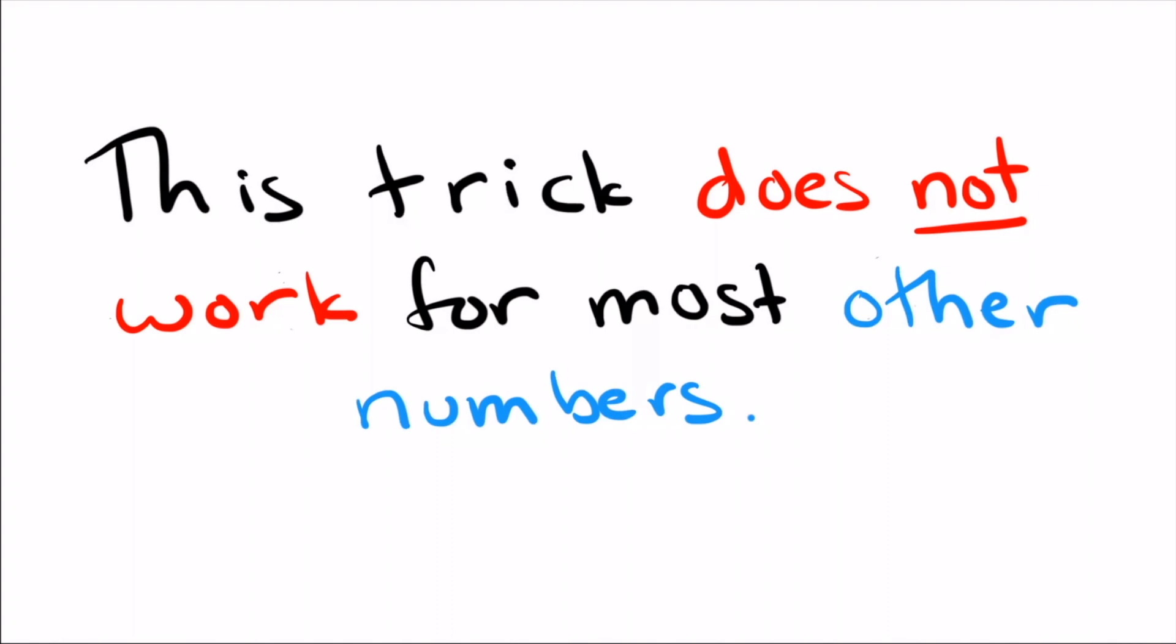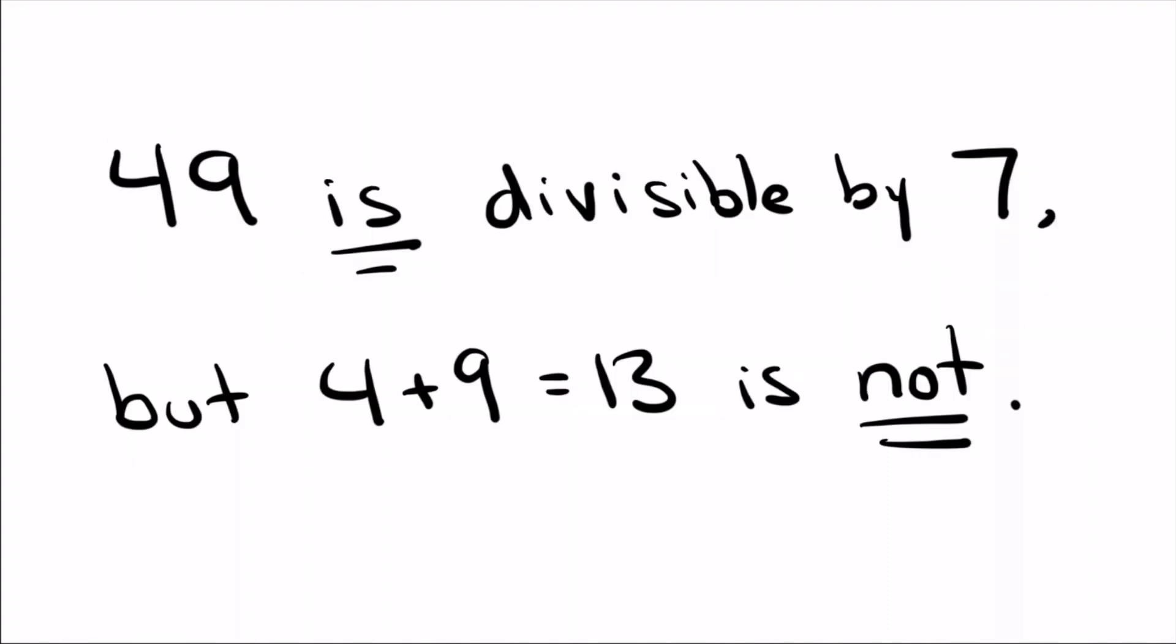Something else interesting about this is in general if you take another number like 7 or 4 or 13 and you try this same trick, like you add up the digits and check if they're divisible by 4 or whatever, you see the trick doesn't work for other numbers. 49 definitely is divisible by 7, but if you add up the digits, you get 13, which is not divisible by 7. So the most important question is why does it work for 3? Why does it not work for other numbers?